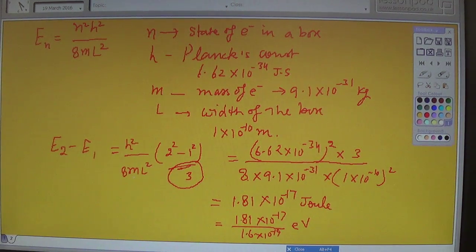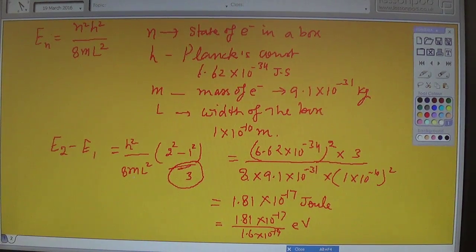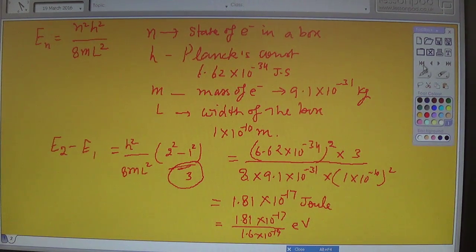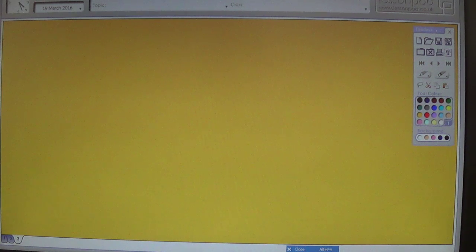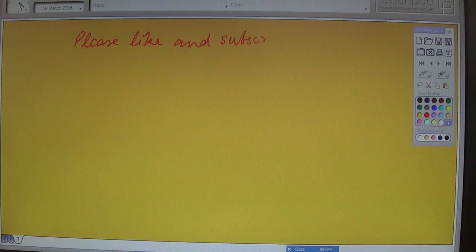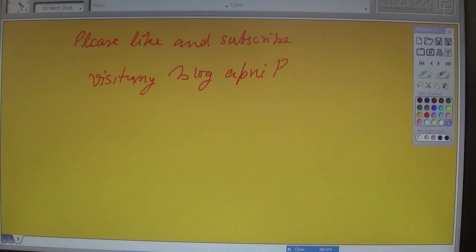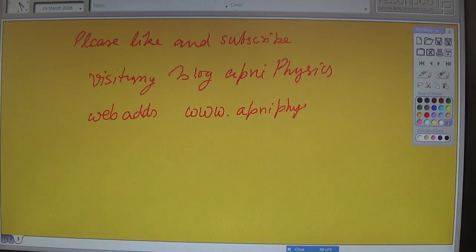By this way you can find out the answer between the two different states of electron in a potential well. Thanks for watching this video. If you have any questions, you can message me below. If this lecture is helpful to you, then please like and subscribe this video channel and visit my blog Apni Physics. The web address is www.apniphysics.com. Thanks once again, today is 19th March 2016.